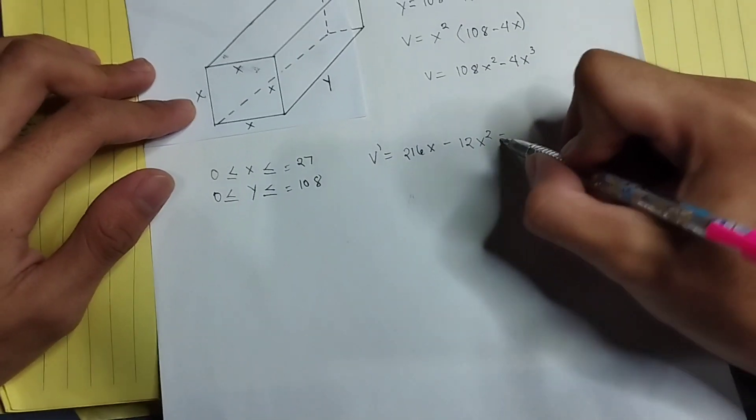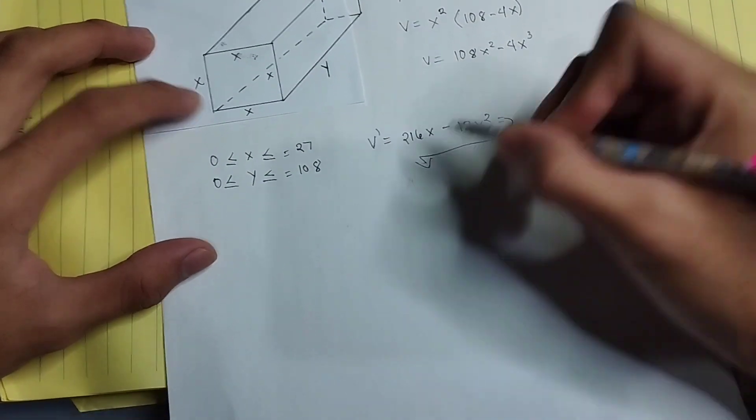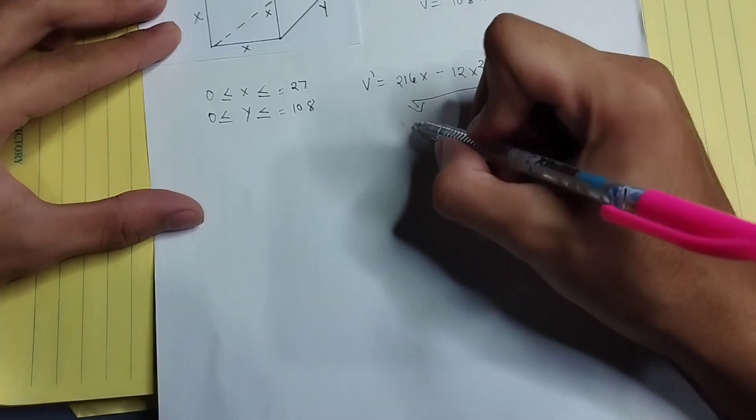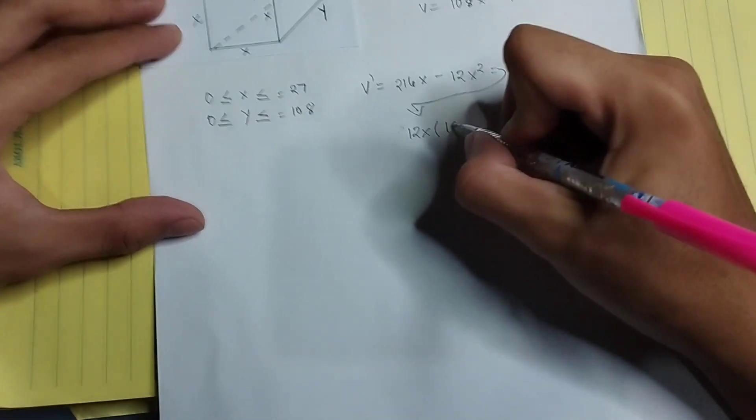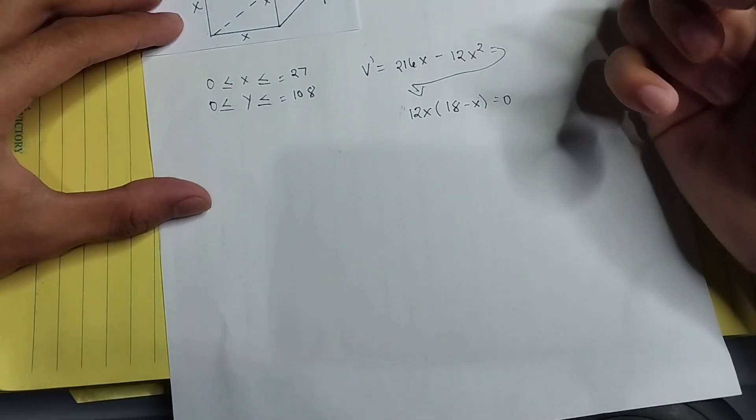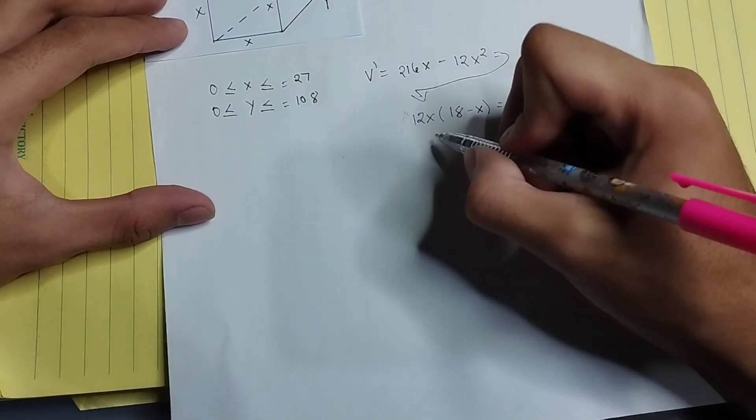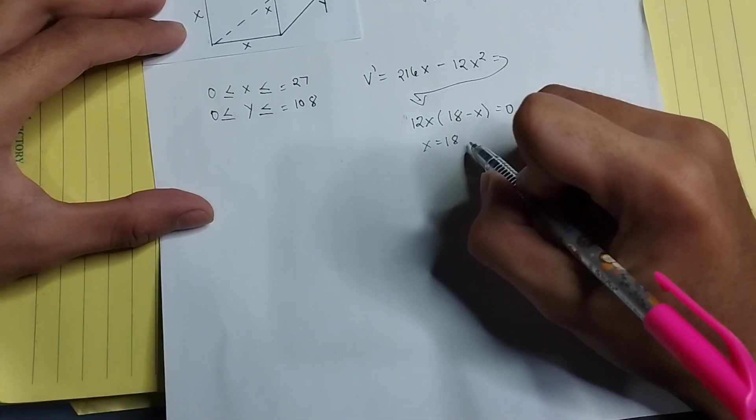So we can factor it out into this formula: factor it out as 12x times (18 minus x) equals zero. And then our critical point will be x equals 18, and it can be also zero, which will prove that the maximum value is nothing.